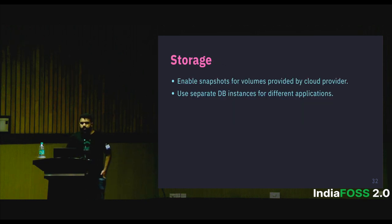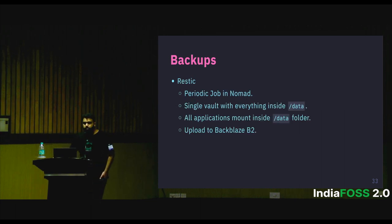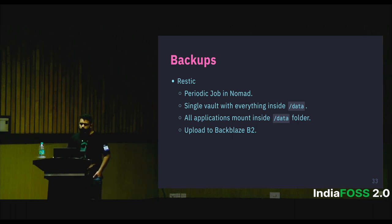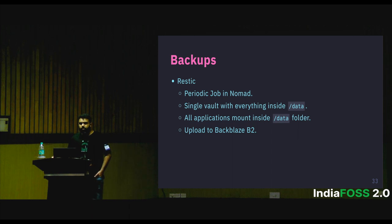Storage is also an important concern in self-hosting — you always want to keep track of backups. For that I use Restic. Restic lets you encrypt data at rest, compress it, and upload it anywhere, including cloud providers. I use Backblaze B2 object storage because it's the cheapest available. I mount all my volume mount points — whatever database instances I'm running — inside a particular folder, and then run Restic as a cron job inside Nomad as a periodic job. Once a day it takes a compressed snapshot and uploads it to B2.